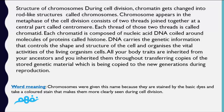Each of the two threads is called a chromatid. Each chromatid is composed of nucleic acid DNA coiled around molecules of proteins called histones. DNA carries the genetic information that controls the shape and structure of the cell and organizes the vital activities of the living organism.